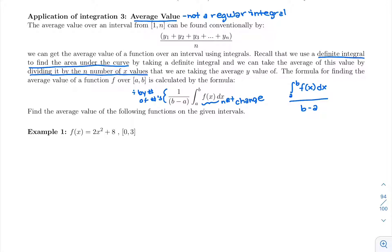Looking at this first one, we want to find the average value of f(x), which is 2x² + 8, on the interval from 0 to 3. So there's our a to b.